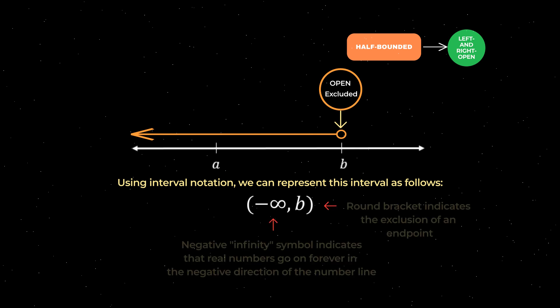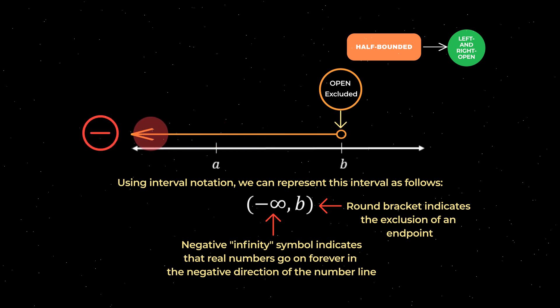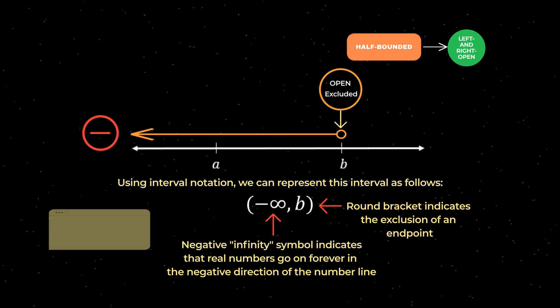Note that this time we not only include a symbol representing infinity, but we also include a negative sign in front of the infinity symbol. We do this to indicate that the real numbers in this interval go on forever in the negative direction of the number line. As a review exercise, pause this video and try to represent this interval in set builder notation, then press play and I will go through the solution.